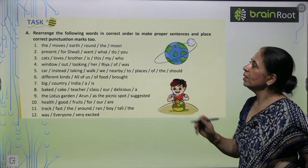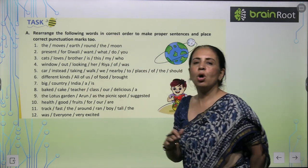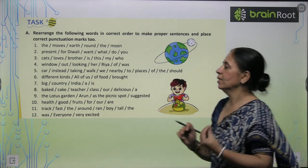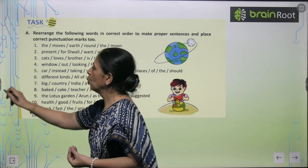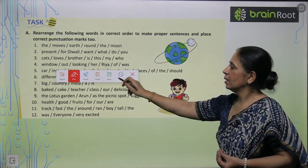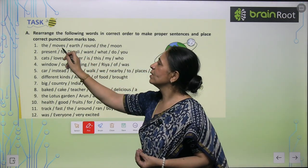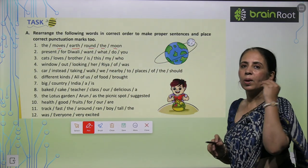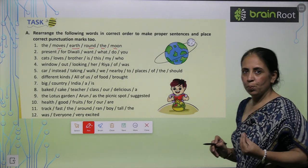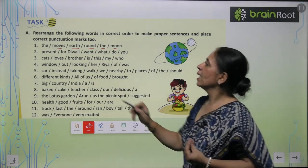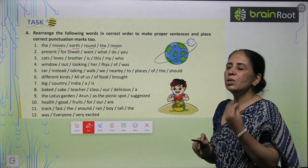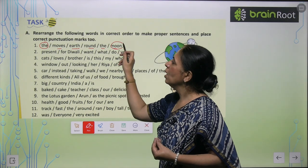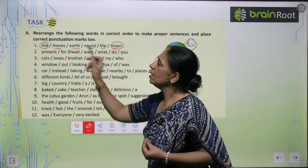Now we move further. We have some combinations of words arranged in order to form a proper sentence. Let's practice. 'The moves earth round the moon' — what does it move? The moon moves round the earth. So the correct sentence is: the moon moves round the earth.